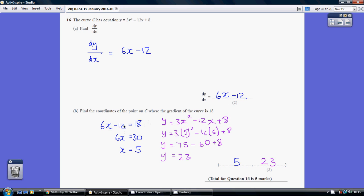Adding 12 to both sides, 6x equals 30, so x equals 5. So our x value is 5. Now, how do we work out the y value? Well, we've got to go back to our original curve.